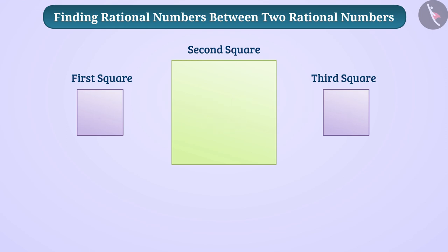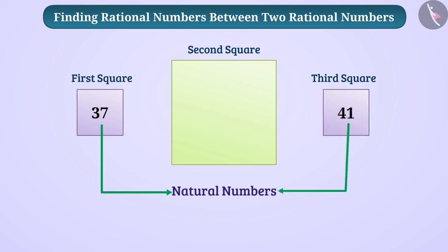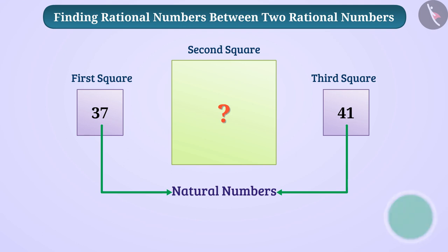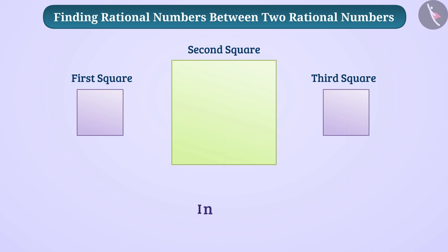Let's start the game. If the natural numbers in the first and third square are 37 and 41, then what natural numbers can be written in the middle square? In this square we can write natural numbers like 38, 39, and 40. Apart from these, no natural number can be written. Similarly, there are fixed natural numbers between any two natural numbers.